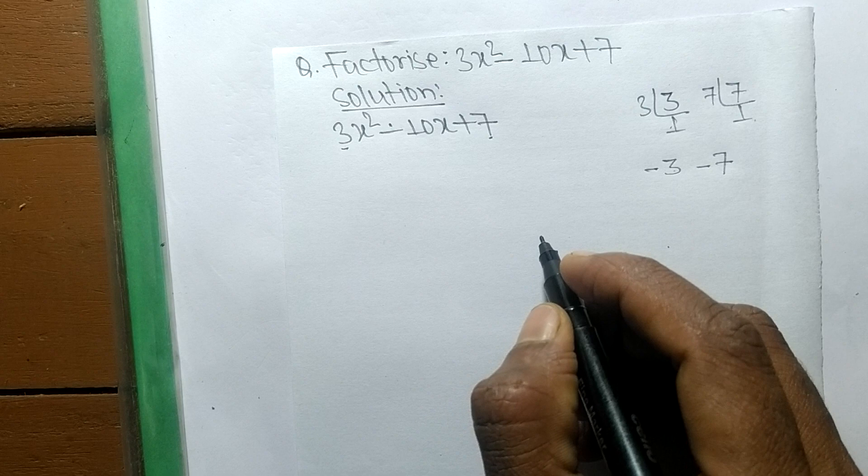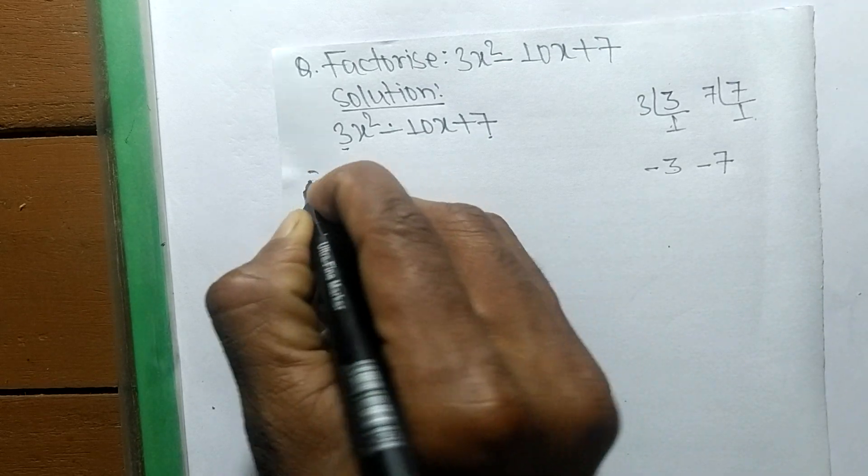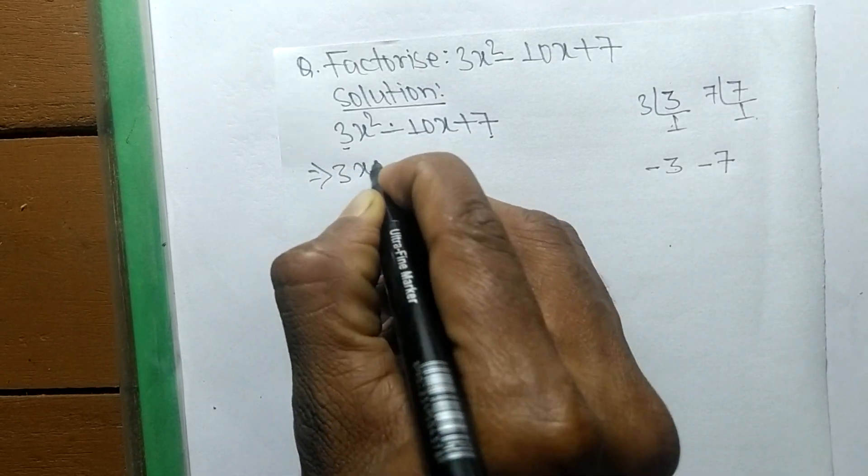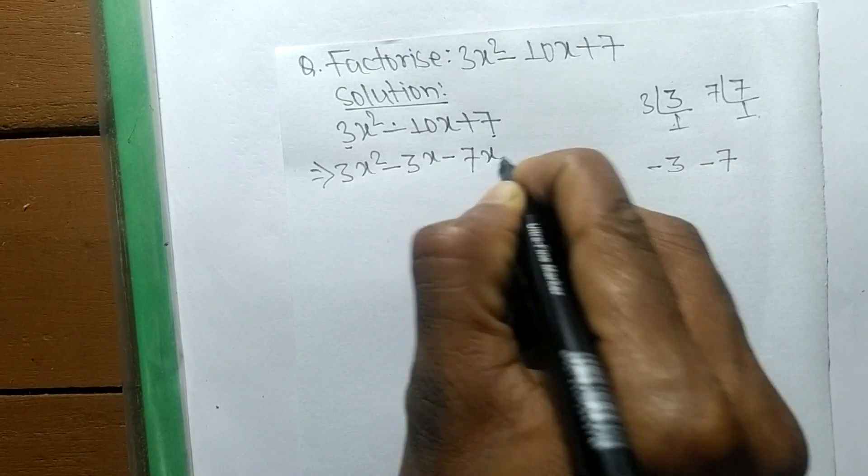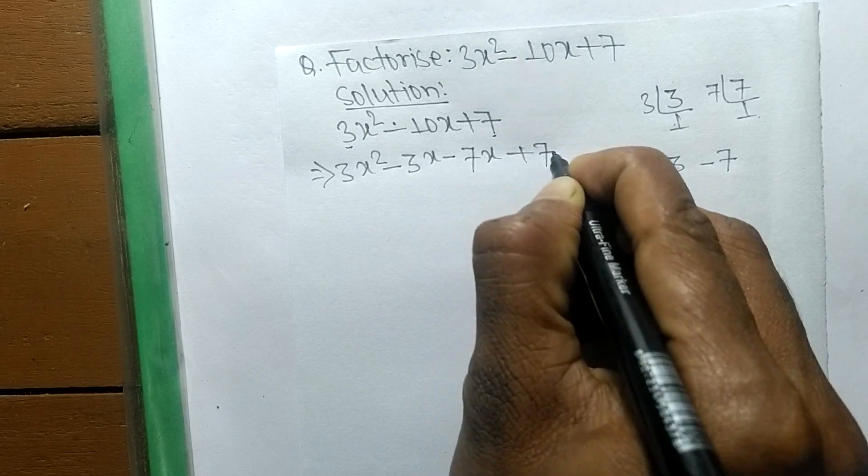-3 and -7 gives -10. So we can write it as 3x² - 3x - 7x + 7.